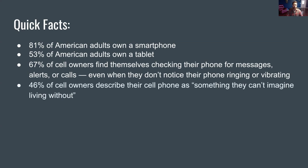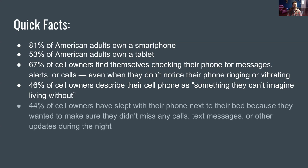46% of cell owners describe their cell phone as something they can't imagine living without, and I'd say that's somewhat true — a lot of the phone numbers I need are in my phone, I don't have them memorized, and a lot of the things I use to get through my average day I need my phone for. 44% of cell owners have slept with their phone next to their bed to make sure they didn't miss any calls or messages. It's such an intimate part of our lives, and it's important for journalists, media professionals — whether you're in advertising, public relations, or journalism — to connect with people where they are, and they're on their phones.